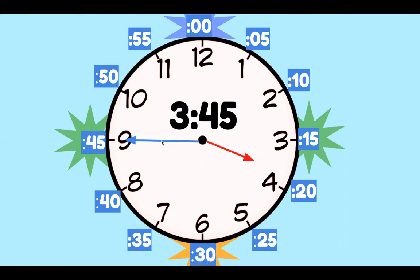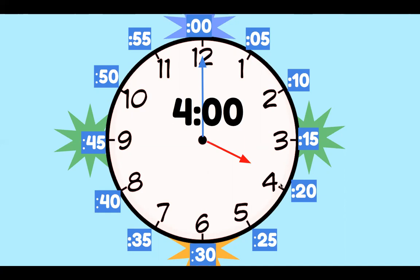Our minute hand is pointed to the 45 and our hour is almost on 4, but it's still in the 3. Now let's practice on your own. Oh, I missed the last one. 4 o'clock and now our hour hand is on 4 and our minute hand is back to o'clock. We just went a full hour.